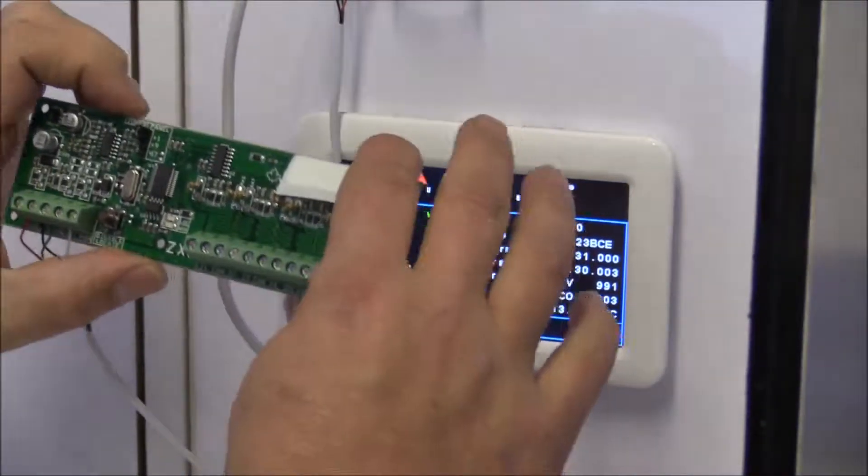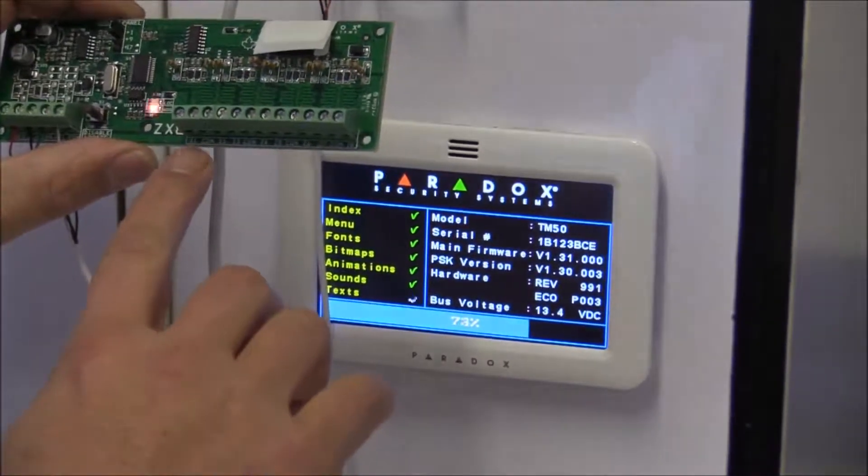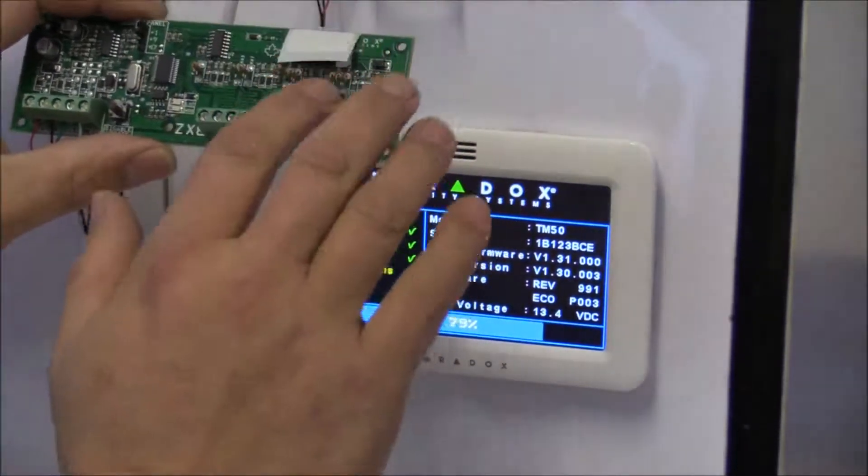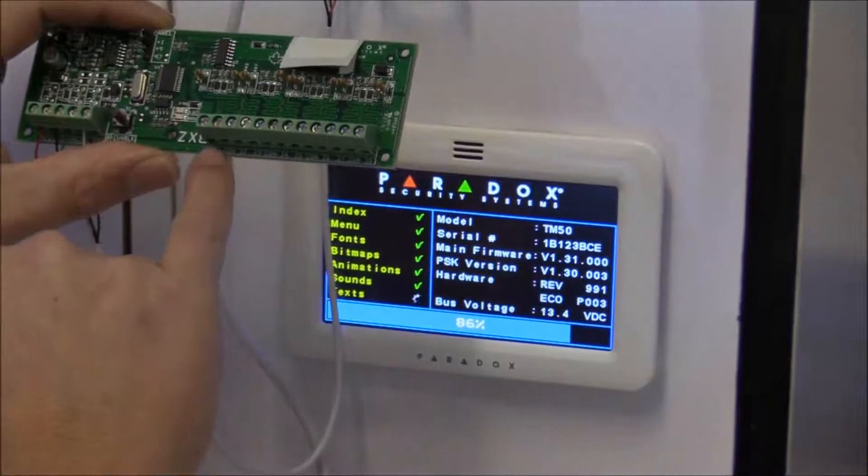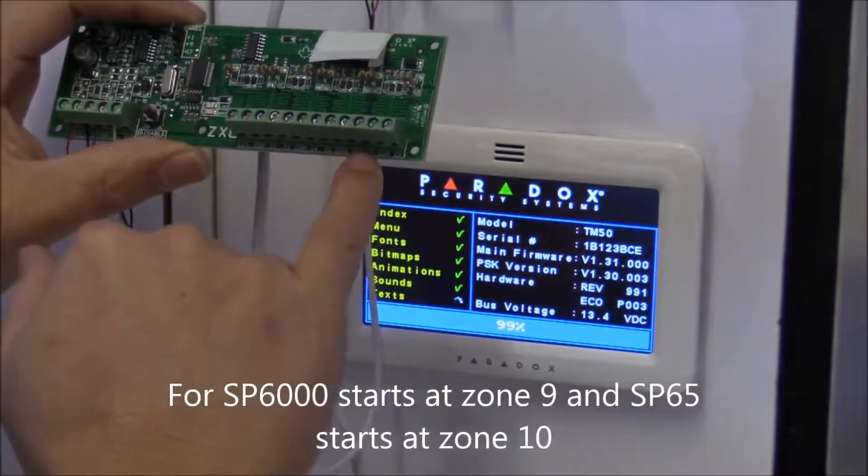So from this expander, your zones will be for the 50-50. It will start at zone 6, 7, 8, 9, 10, 11, 12 and 13.